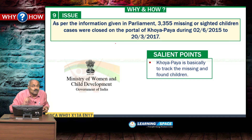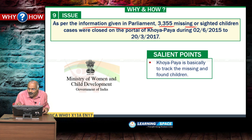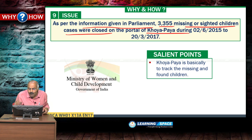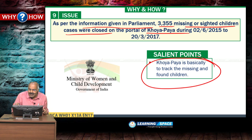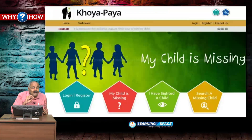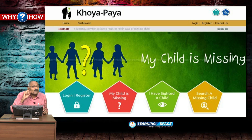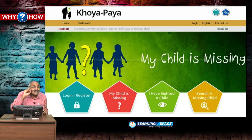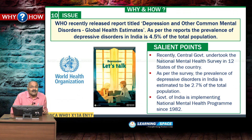As per information given in Parliament, 3,355 missing or sighted children cases were closed on the portal of Khoya Paya. Khoya Paya is basically a portal to track missing children and found children.